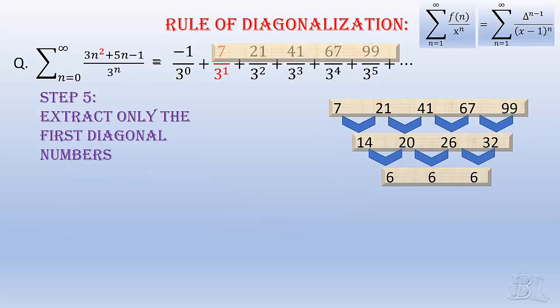Then, extract only the first diagonal elements, that is, 7, 14 and 6 in our case.